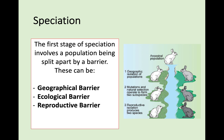The first stage of any speciation event has to involve a population being split apart by a barrier. These can be geographical barriers, ecological barriers, or reproductive barriers. Geographical barriers are more obvious — a mountain range forming within a population, or a river splitting a population into two. It's important to remember that evolution doesn't happen overnight; things like a mountain range appearing take place over a long, long period of time.